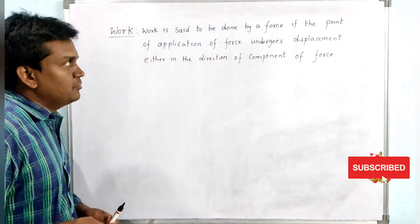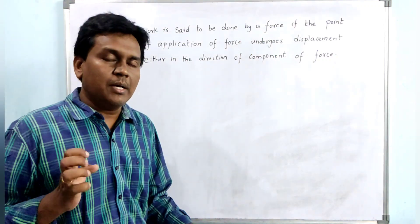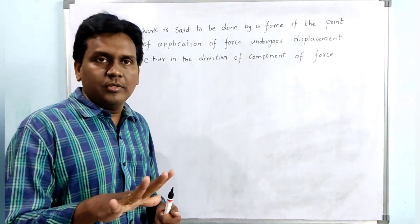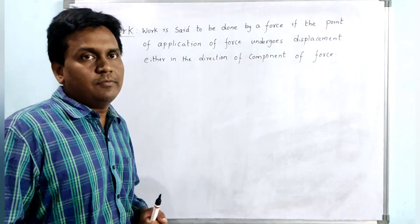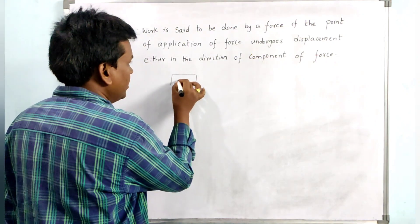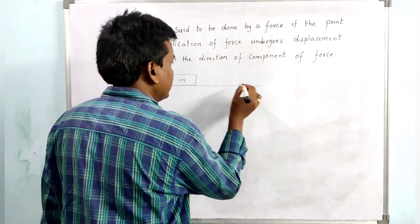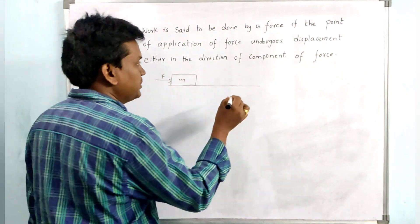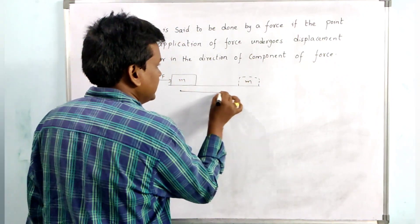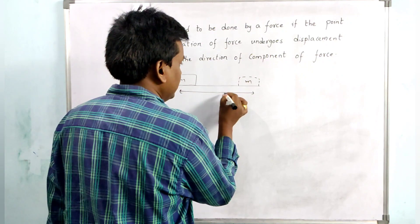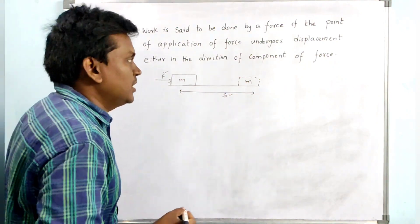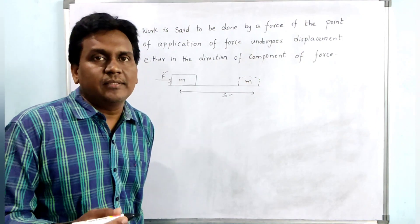If the point of application of force undergoes displacement — so due to the application of force, the body has to displace either in the direction of force or in the direction of the component of force. If you consider a block of mass, with the application of force it has been displaced. So as there is a force applied and there is a displacement, we can say that work is done.